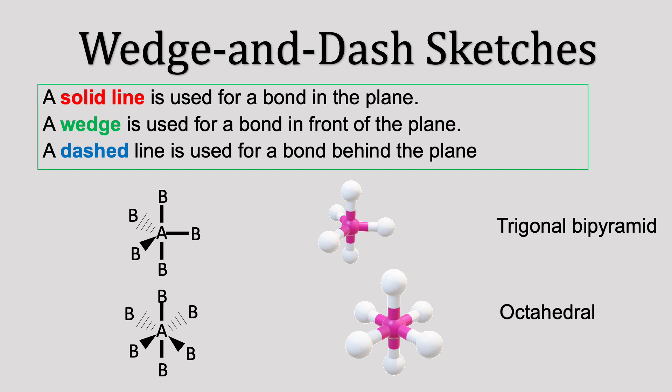Let's look at the trigonal bipyramid and octahedral structures next. First, solid lines are bonds flat on the screen, or in the plane. For the trigonal bipyramid example, you can see there are three bonds in a T-shape.